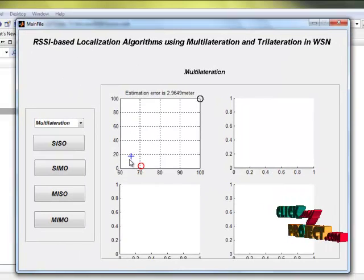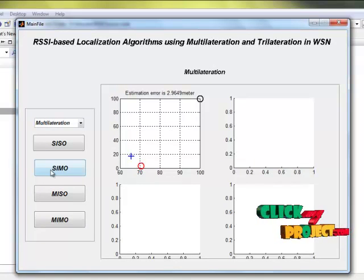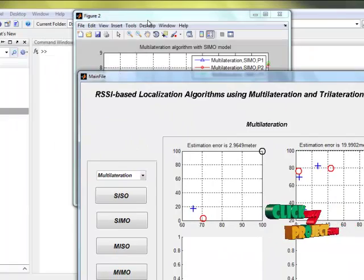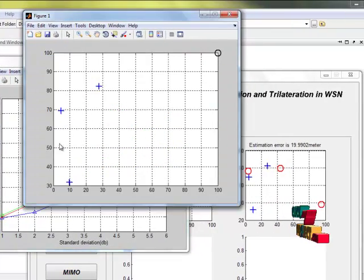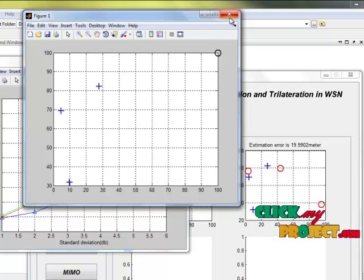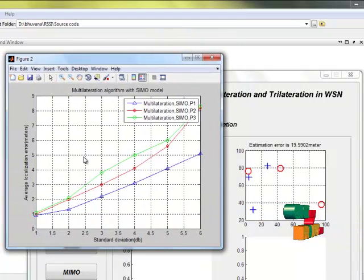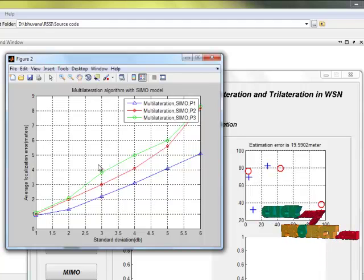This is the mobile location which is estimated. Single input then single input with multi outputs. Here single input so the anchor node is one. And multi output means mobile nodes are this. The number of output may be infinity numbers. This is the graph plotted for single input with multi output.